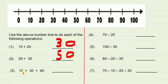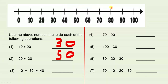The next one: ten plus thirty plus forty. We start on the ten. The next number is thirty: ten, twenty, thirty. The next number is forty: ten, twenty, thirty, forty. We've landed on the eighty, so that's the answer.